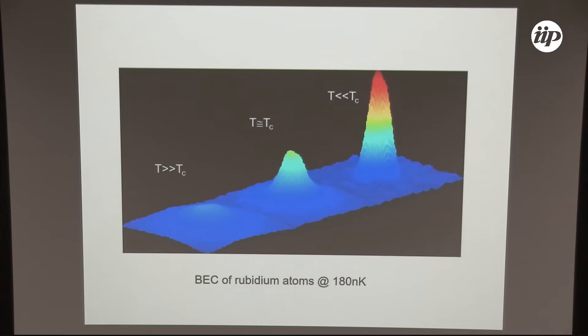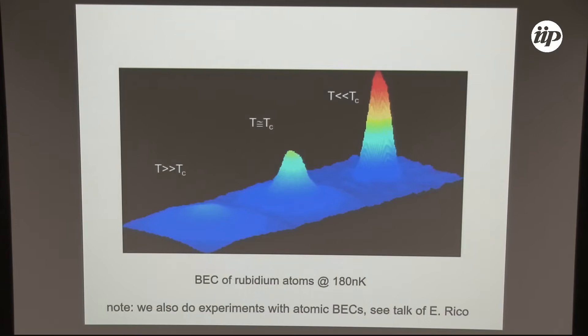When talking about Bose-Einstein condensation, one mostly thinks of atomic Bose-Einstein condensates in this community. What you see here is a series of time-of-flight images of an atomic Bose-Einstein condensate when cooling through the phase transition at very low temperatures, at around 200 nanokelvin.